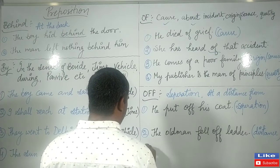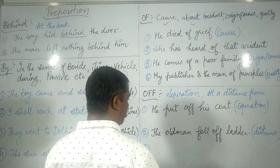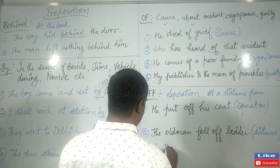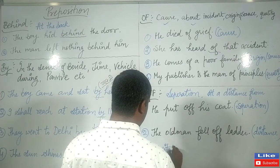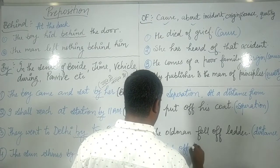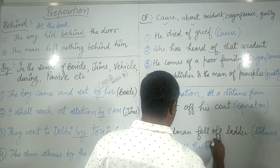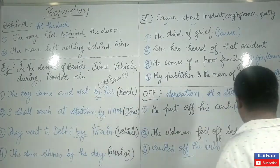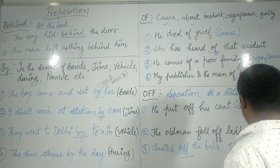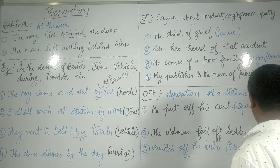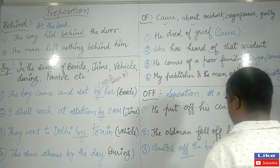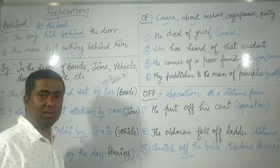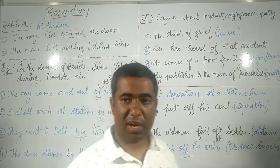There is a third use of 'off' that was missed: it is used with electrical devices. For example: switch off the bulb. 'Turn off' and 'switch off' are both used with electric devices to indicate that they are being closed or turned off. So this is another important use of 'off.'